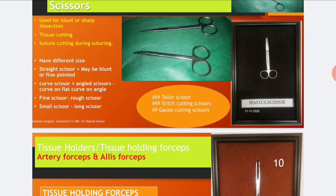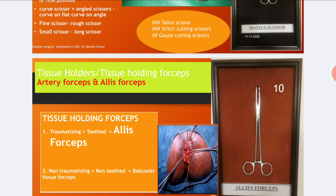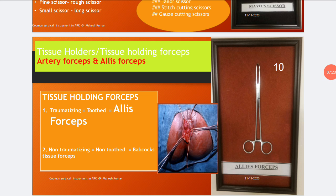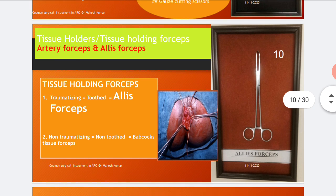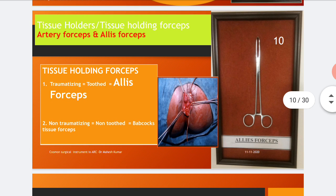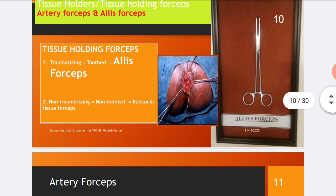Tissue holding forceps include artery forceps and ellipse forceps. The ellipse forceps are traumatizing and toothed. Its features include straight, separated blades with sharp teeth at the tip, interlocking on closing, and a catch lock system. It is used to hold thin, tough structures, provide space for visualization during dissections, hold skin, deep fascia, fibrous tissue during dissections, and hold the bladder edge during urinary bladder surgery.